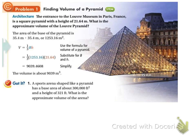Let's try our got it problem. A sports arena shaped like a pyramid has a base area of about 300,000 feet and a height of 321 feet. What is the approximate volume of the arena? Well, this is kind of easy. We don't even need to draw a picture.